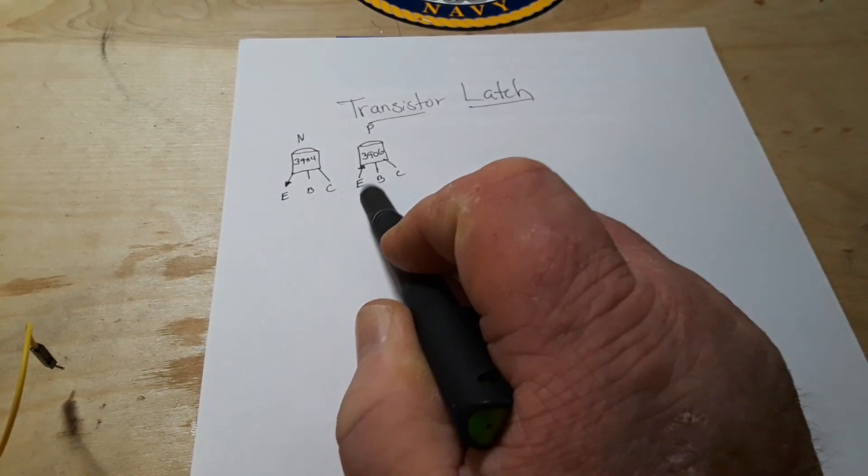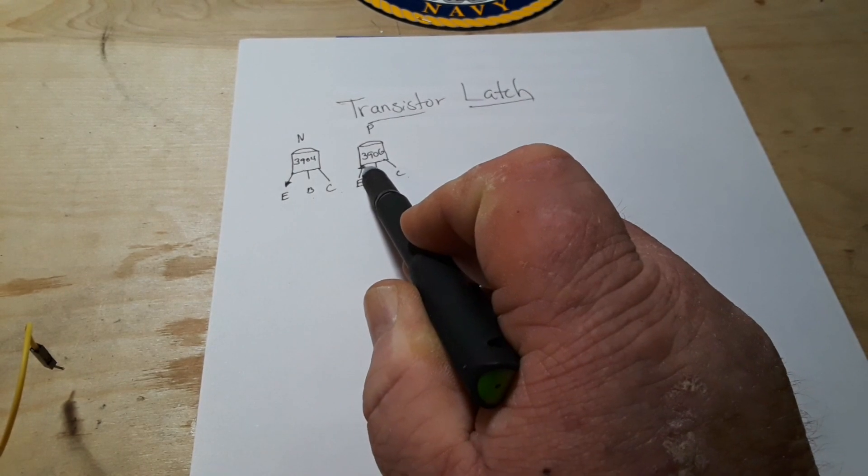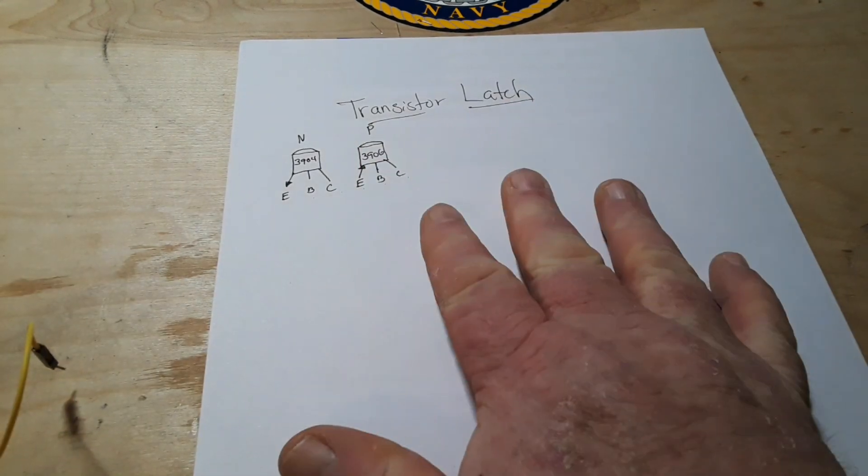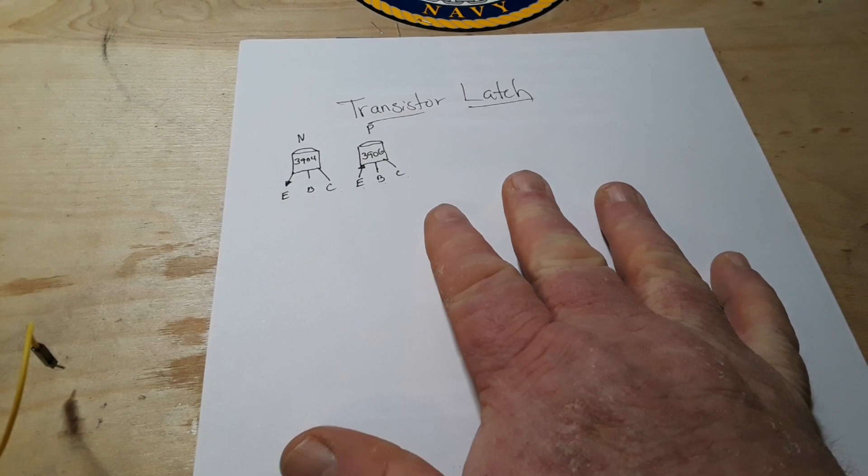Emitter, base collector, emitter, base collector, and I mark the directions there so you can see the flow. All right so this is a really neat circuit.